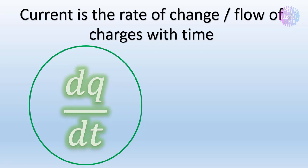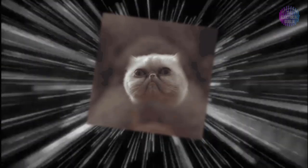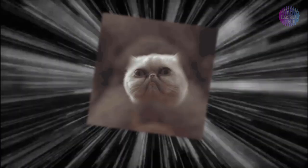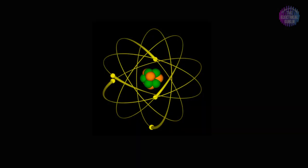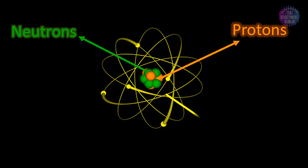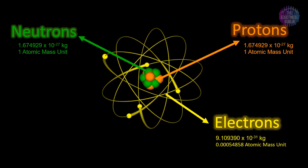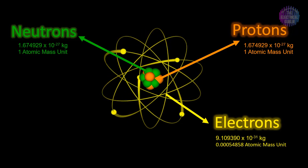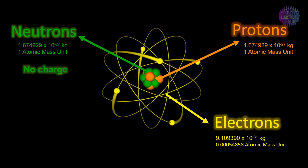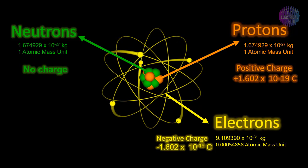So current is not related just to electrons but to charge. To understand current, we first need to understand charge. All matter in this world is made up of atoms. If we zoom into an atom at the atomic level, we see it is made up of three subatomic particles: neutron, proton, and electron. Neutrons and protons have one atomic mass unit weight, while electrons are relatively lighter at just 0.00054 atomic mass units. Neutrons are chargeless, protons are positively charged, and electrons are equally negatively charged.